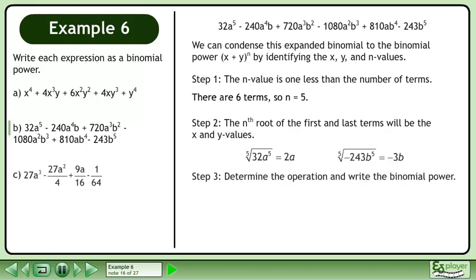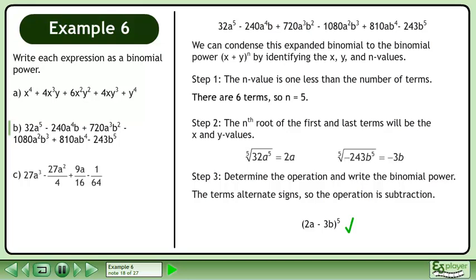In step 3, determine the operation and write the binomial power. The terms alternate signs, so the operation is subtraction. The binomial power is 2a minus 3b raised to the power of 5.